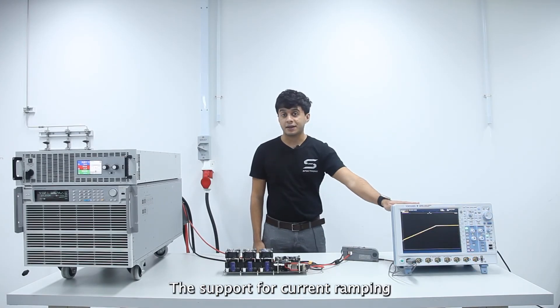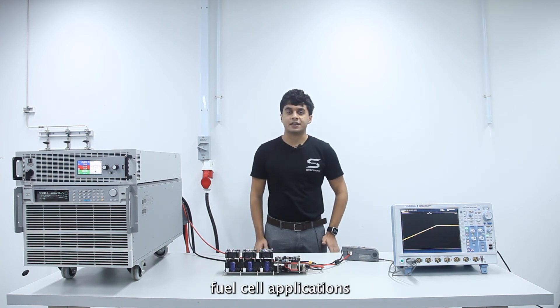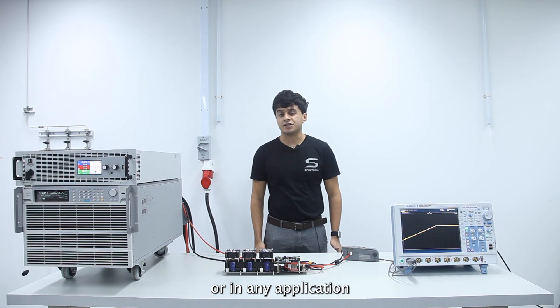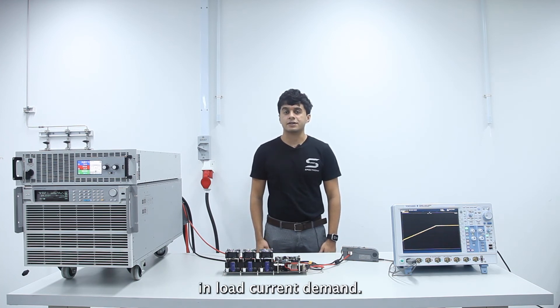The support for current ramping makes the Cerebro 55 ideal for use in hydrogen fuel cell applications, or in any application where we want to protect the power source from sudden spikes in load current demand.